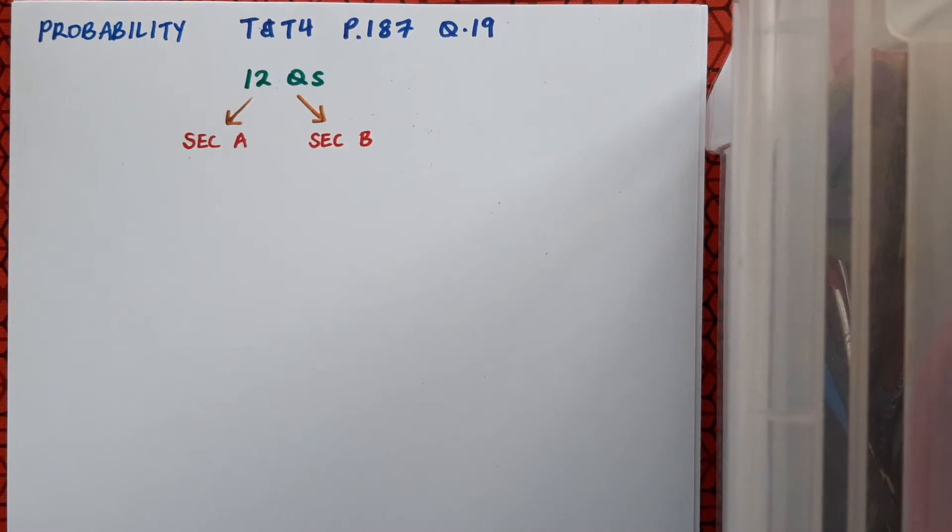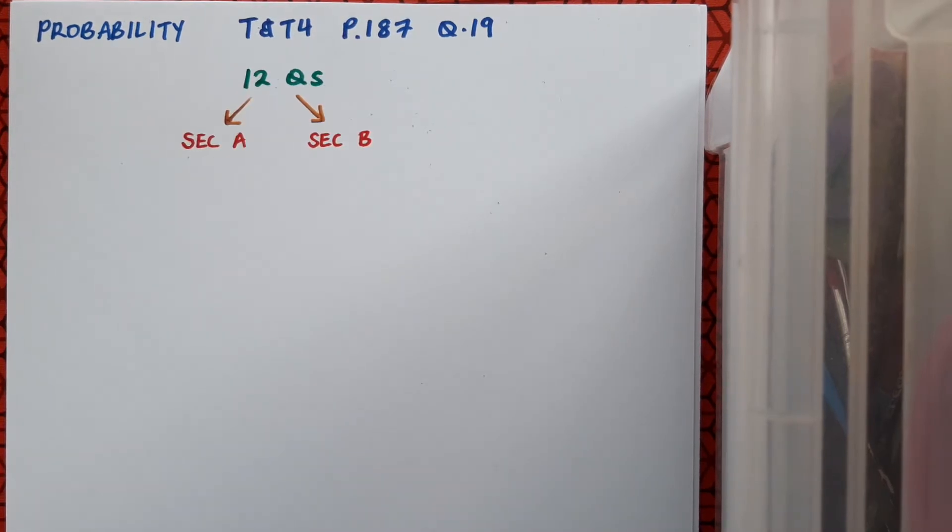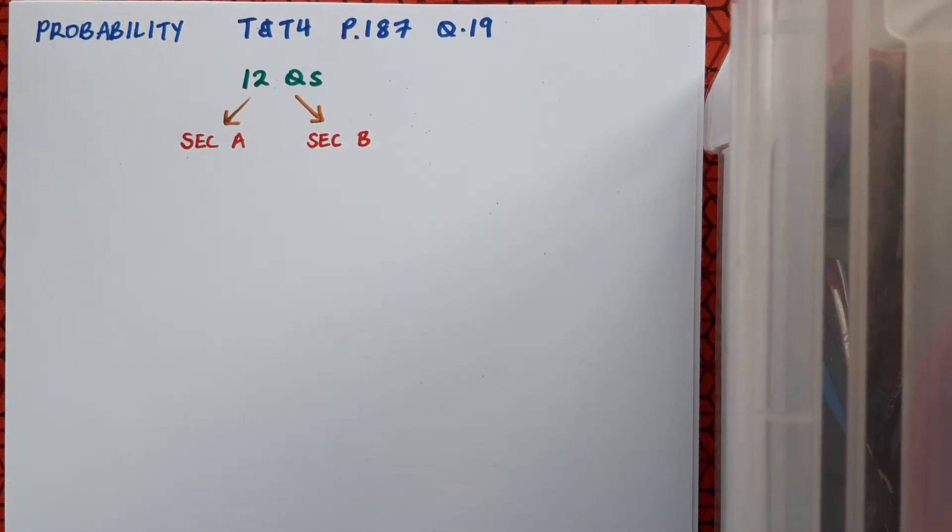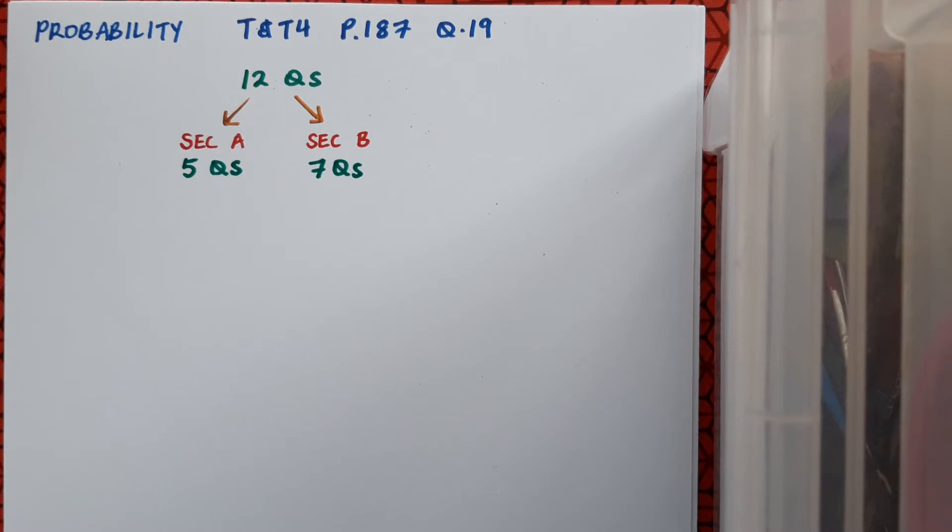This probability solution video is for Texas tests, page 187, question 19. The question states that an exam paper consists of 12 questions divided into section A and section B. There are five questions in section A and the rest are in section B, so that's five questions and seven questions.